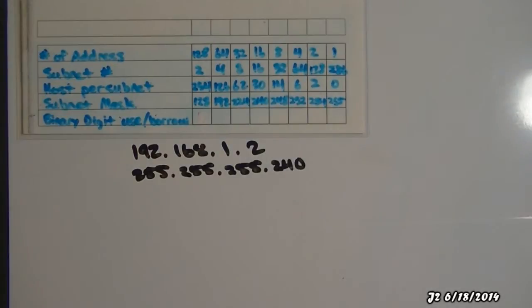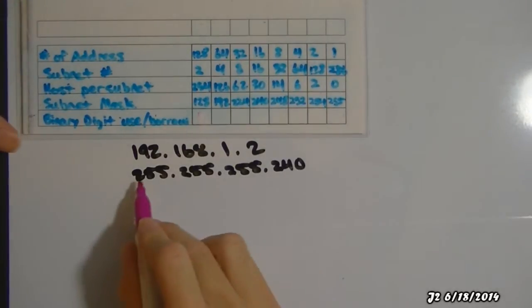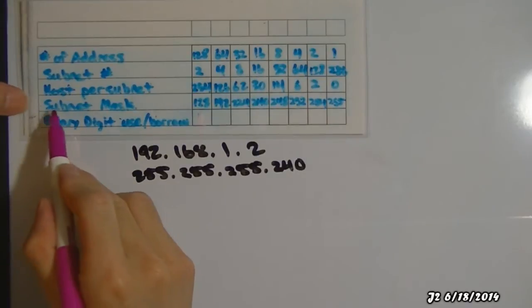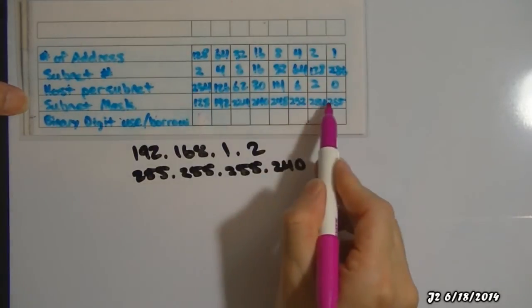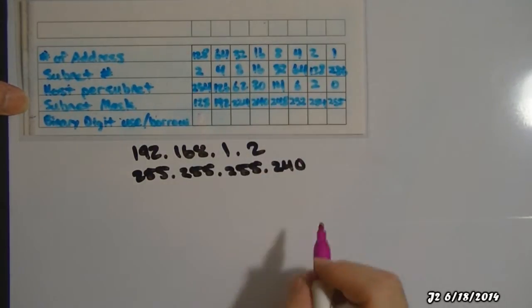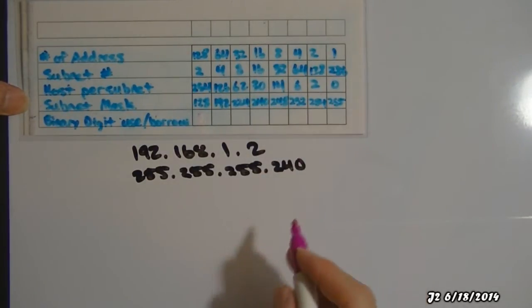Okay, and the only thing I'm looking at is the subnet mask — that right there — and I'm going to be using that to determine the bits which are being borrowed.